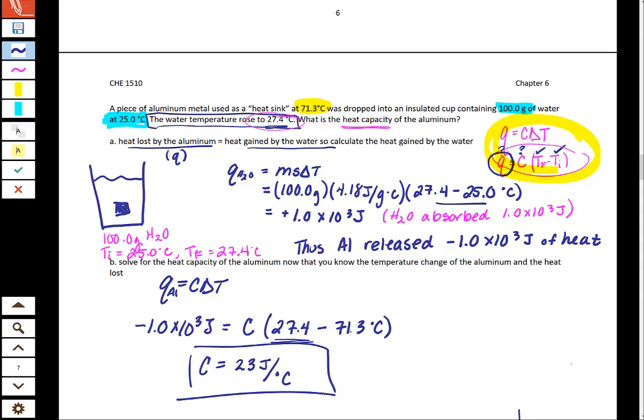So this is a typical heat sink problem. The most common mistake in these problems is to leave out the negative here. And if you leave out the negative here, then you'll accidentally end up with a negative C, which is not possible.